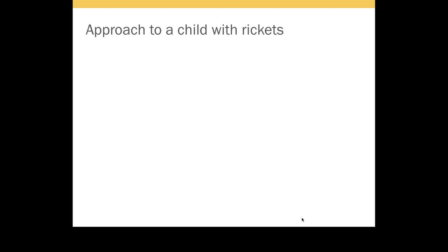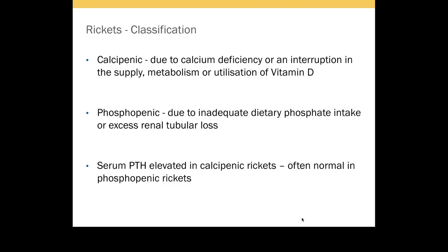I'll be talking about rickets. There are two main types of rickets. One is calcipenic, where either calcium is deficient or vitamin D is deficient, so that the calcium level in the body goes down.